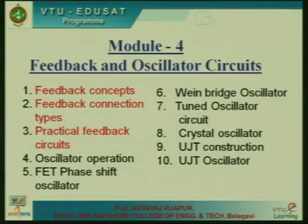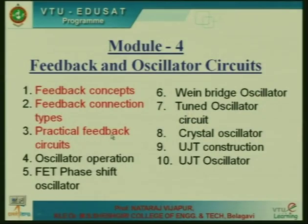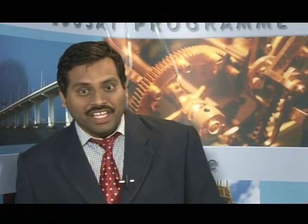In Session 2, we discussed the variety of ways in which feedback occurs — how voltage or current is being fed back, whether it is fed back in series or shunt. There were 4 connection types discussed. Then in Session 2 we also discussed practical feedback circuits, including an example of a voltage series feedback amplifier using an op-amp as well as a FET circuit, and we had started with emitter follower as an example of voltage series feedback.